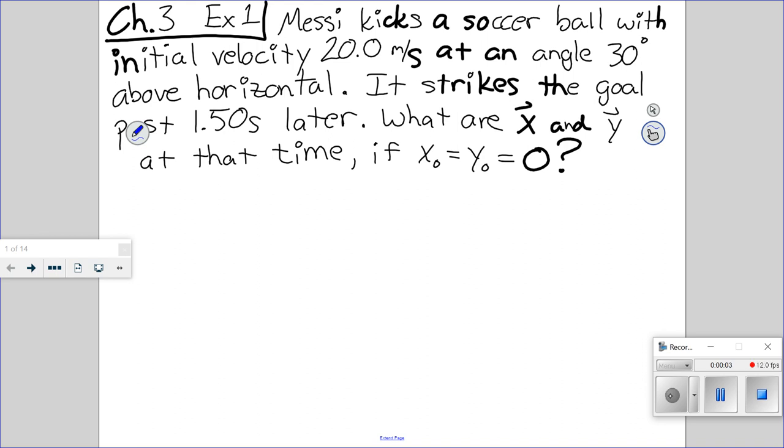Okay, so last time we talked about vectors, and now we have our first serious example for chapter 3. Someone possibly famous kicks a soccer ball. We have initial velocity 20 meters per second, but it's at an angle.